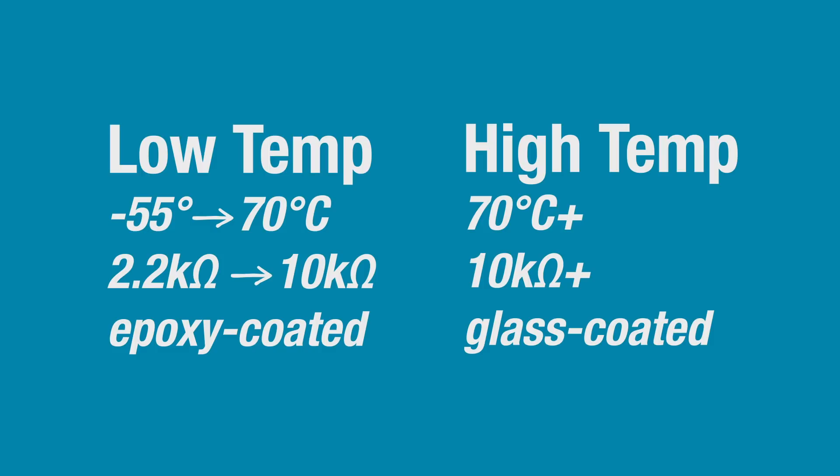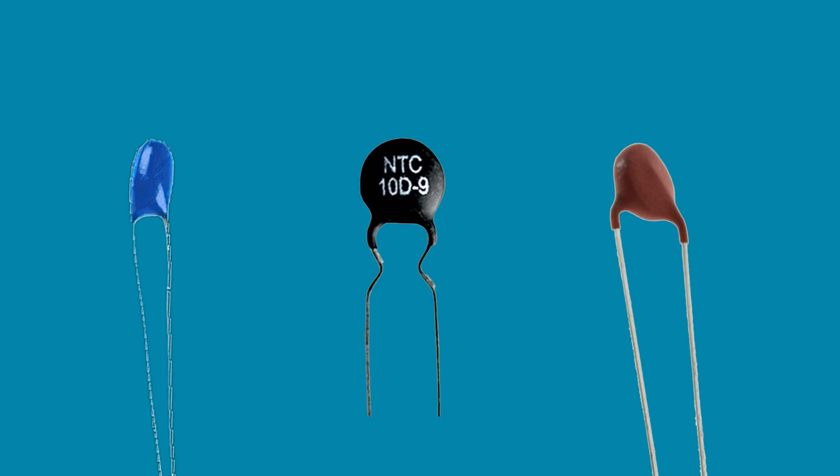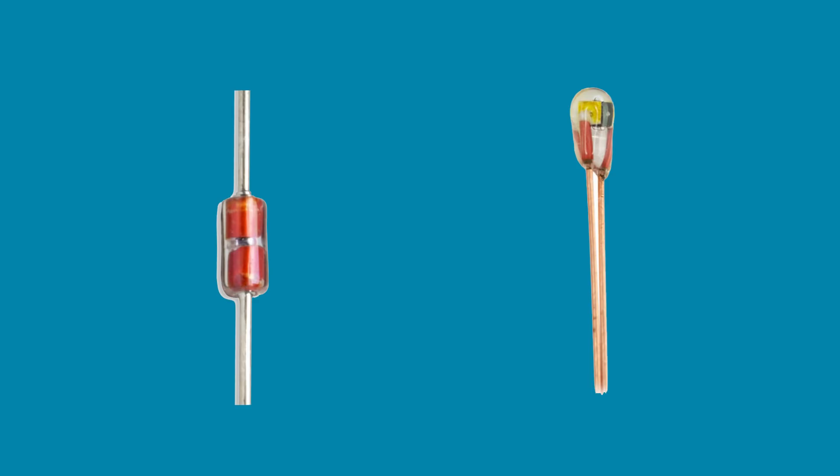When choosing a thermistor, low temperature applications generally use lower resistance thermistors, while higher temperature applications generally use higher resistance thermistors. Epoxy-coated thermistors can withstand temperatures between negative 50 and 150 degrees Celsius, while glass-coated thermistors can withstand temperatures up to 300 degrees Celsius.